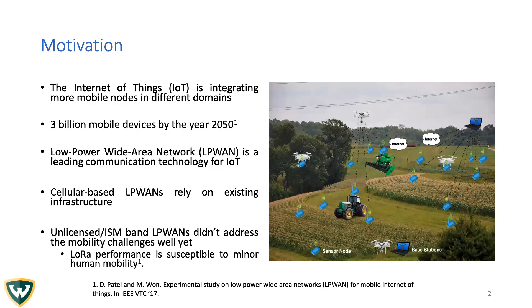Over the past few years, IoT, or Internet of Things, became one of the most important technologies with the goal of connecting every device to the Internet. However, with different devices in IoT, IoT has started integrating more mobile nodes in different domains. For example, in agriculture IoT, the use of drones and tractors equipped with sensors is widely adopted now. It is expected there will be around 3 billion devices by the year 2050. So to support a massive number of devices in IoT, Low Power Wide Area Network is regarded as the leading communication technology for IoT.